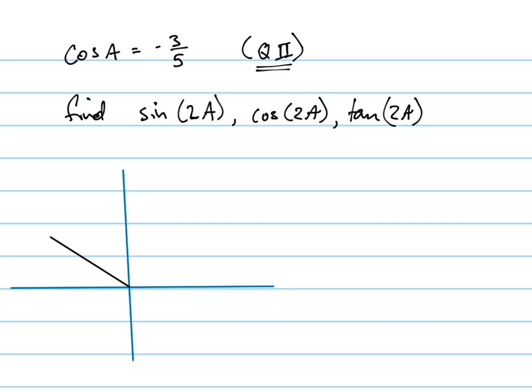Adjacent over hypotenuse. So there's my angle, it's negative 3 fifths, which means this value is 5, this value is negative 3. Let me start over with the picture. So this is my triangle. Start it at the origin, and draw it like that. And this is negative 3, and this is 5.